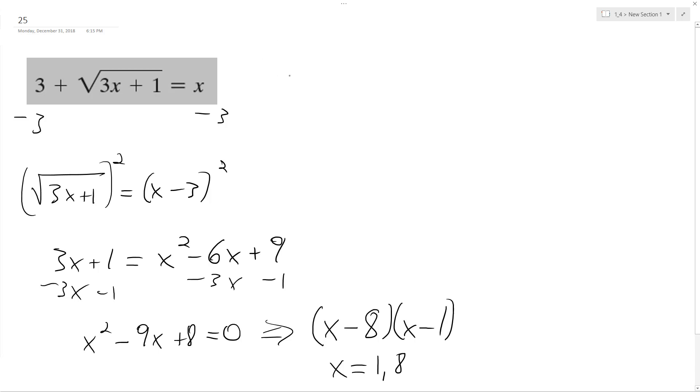So, let's test that. If we use 1, we end up with 3 plus the square root of 4 equals 1. That doesn't work. That's 3 plus 2, which is 5, does not equal 1.